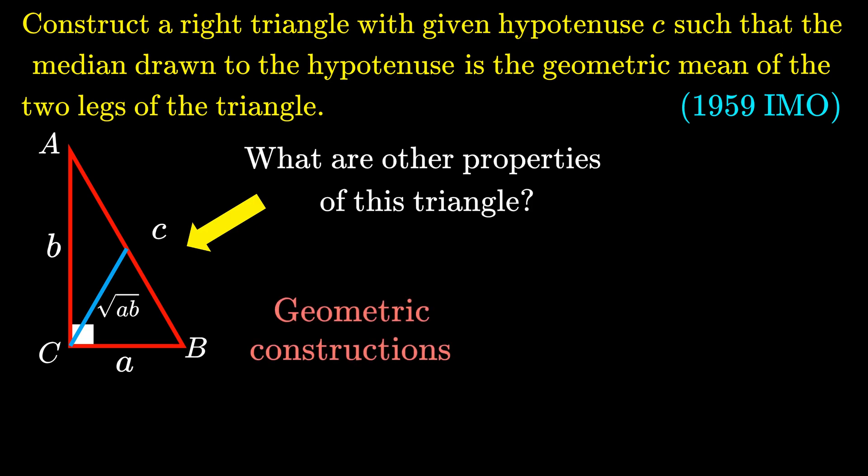The rule of construction is that you can only draw angles, lines, or shapes using a compass and a straight edge without a scale or measurement. This is what we mean by geometric construction in Euclidean geometry.